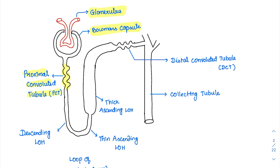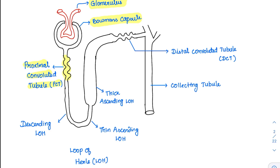Following the proximal convoluted tubule, there is a loop called the loop of Henle. The descending side is called the descending loop of Henle. On the ascending side, there are two types: a thin ascending loop of Henle and a thick ascending loop of Henle.